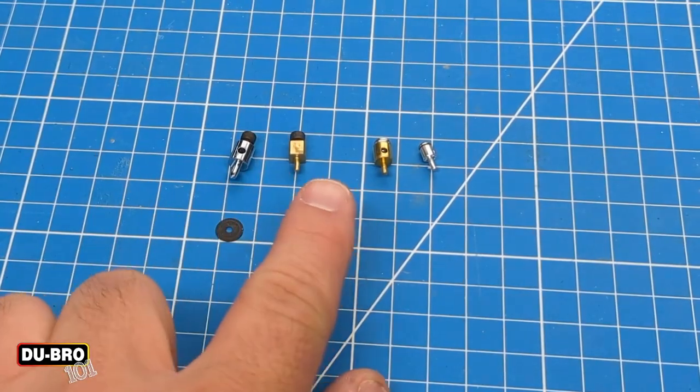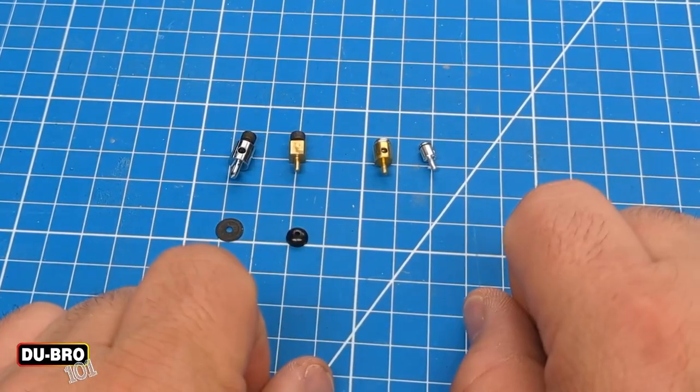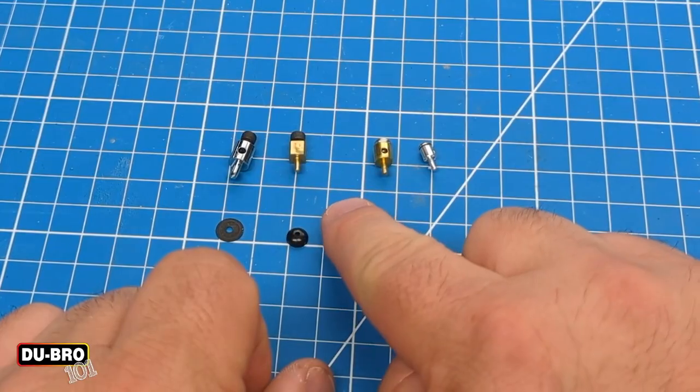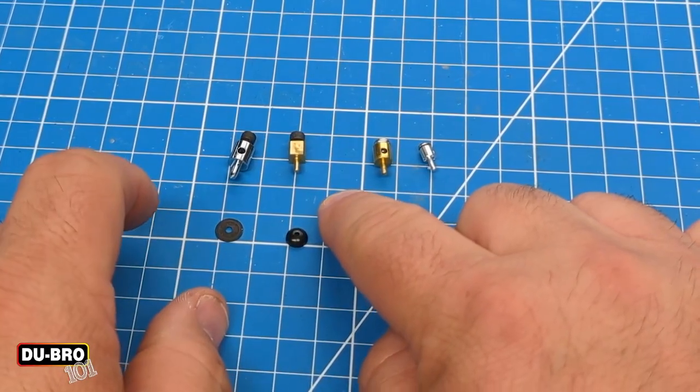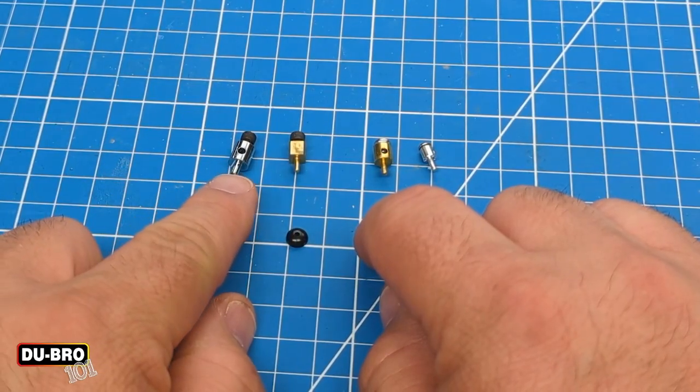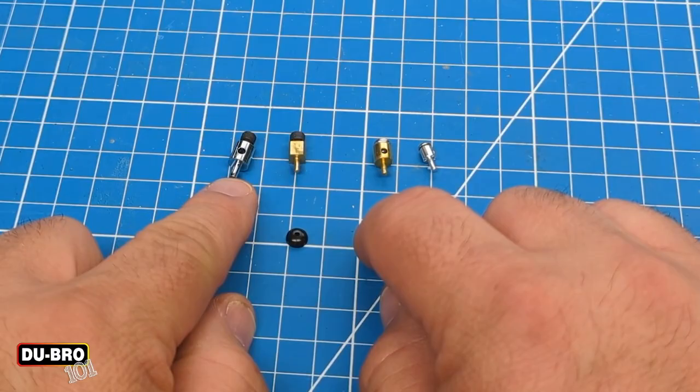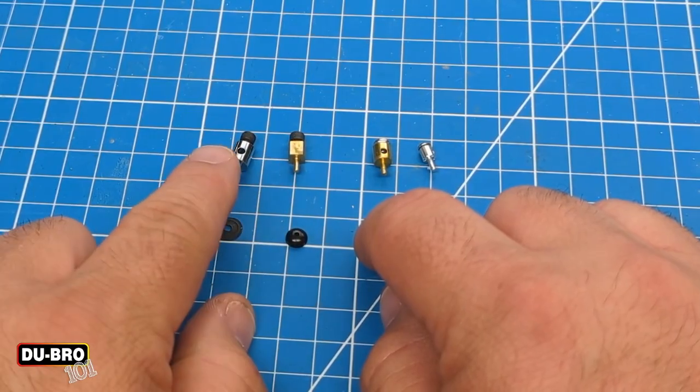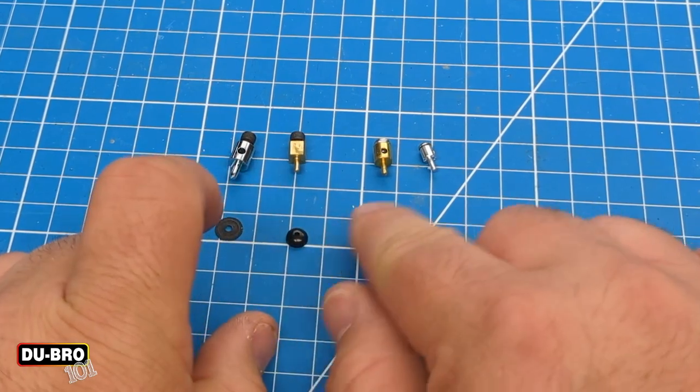To start off with, there are five different flavors of the EZ Connectors. One is missing, but I will explain why. The heavy duty 440 connector requires a 3/32 inch hole, so it is larger than the other of this series.